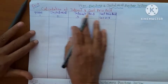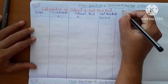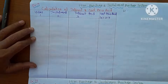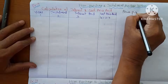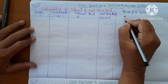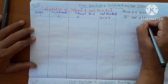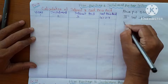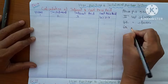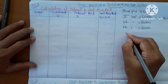We set up the table with columns: higher purchase price, cost price, and interest. The down payment is ₹50,000. The second year installment amount is ₹60,000. The fourth year installment is ₹60,000, and the sixth year installment is also ₹60,000. The rate of interest is 10%.